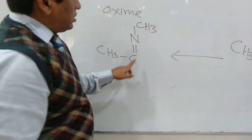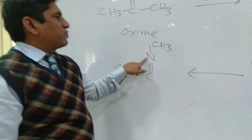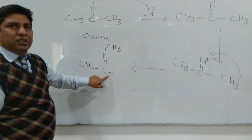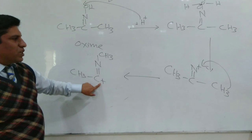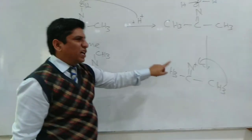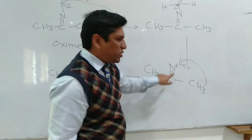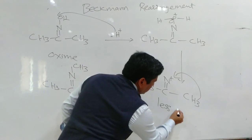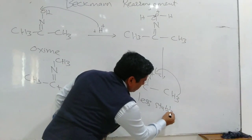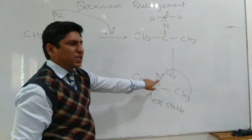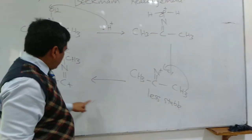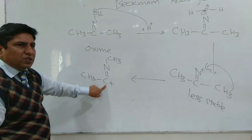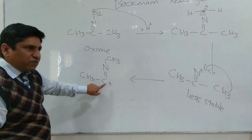Now that positive charge will shift to that carbon, which is more suitable. That carbon carrying positive charge is more suitable as compared to that nitrogen atom carrying the positive charge. So that intermediate is less stable because positive charge is present on the electronegative atom, and that intermediate is more stable because positive charge is present on the electron-deficient carbon atom.